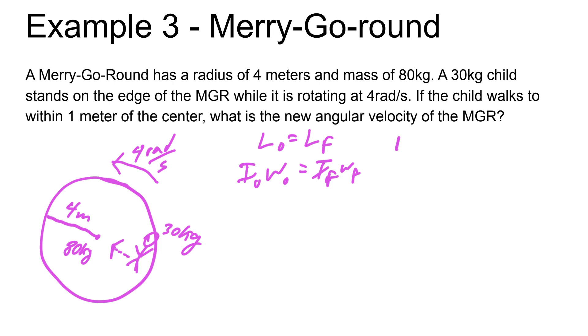We have to find the I initial. Remember, for merry-go-round type problems or anytime you have two objects, find the inertia of each object and add them together. The merry-go-round plus the child. The I of the merry-go-round is modeled as a solid disk, so that's one half MR squared. We'll go ahead and do one half, the mass is 80, the radius was 4 squared.